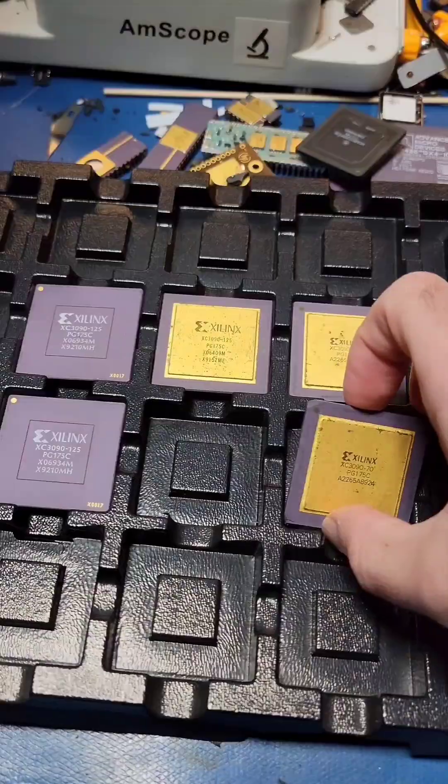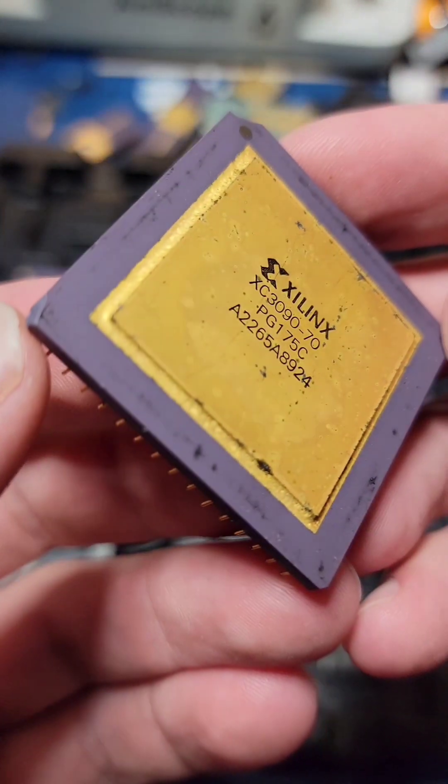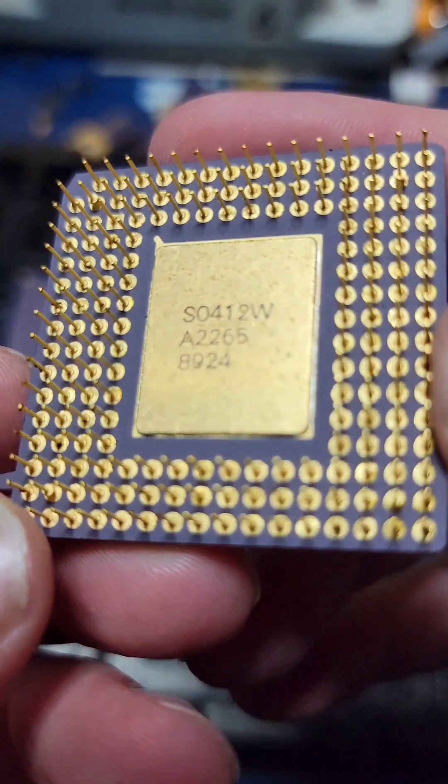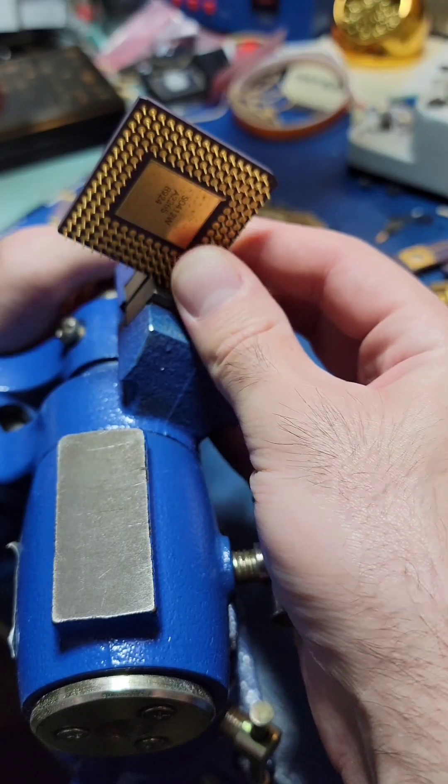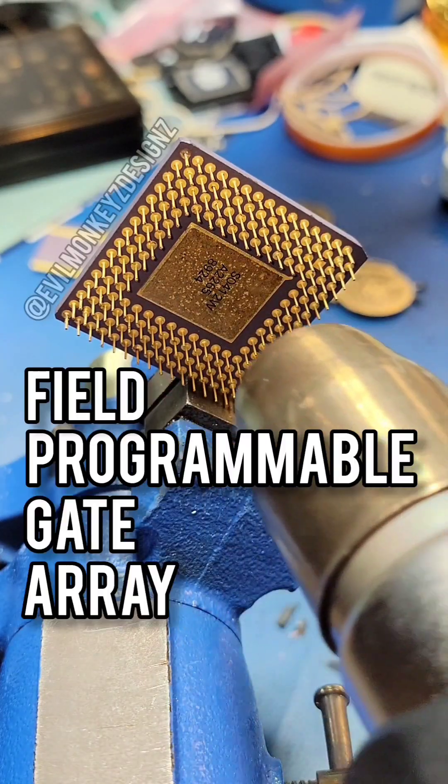Let's take a closer look at an old FPGA from Xilinx, the XC3090. For those that don't know, FPGA stands for Field Programmable Gate Array.